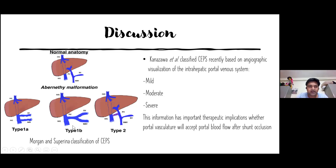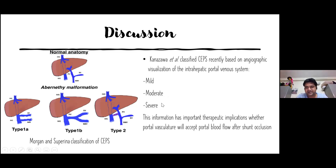The treatment for Type 1A and 1B is liver transplantation. For Type 2, since the portal system is otherwise intact, we can block the extra connection — by a device occluder, a covered stent in the IVC, or surgical ligation. Kanazawa et al. further classified Type 2 based on angiographic visualization of the intrahepatic portal venous system: it can be mildly, moderately, or severely atretic.